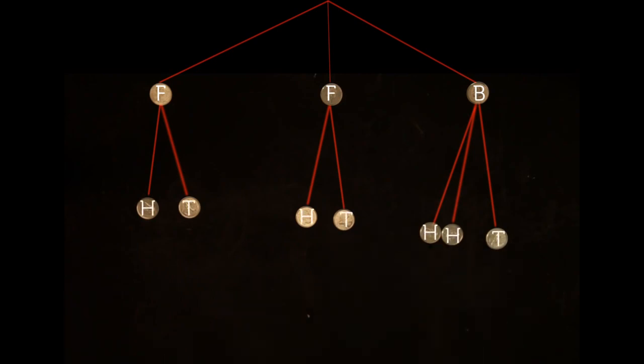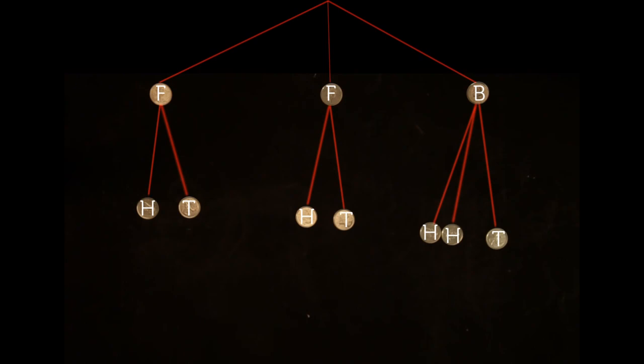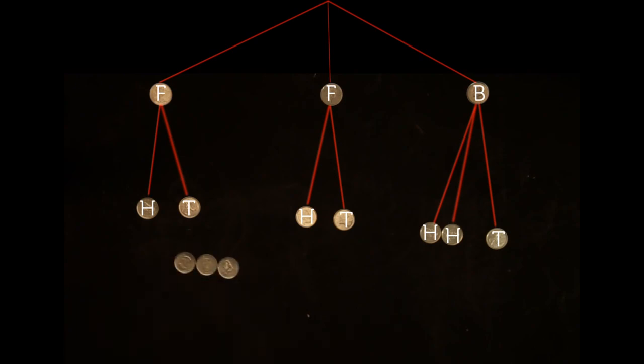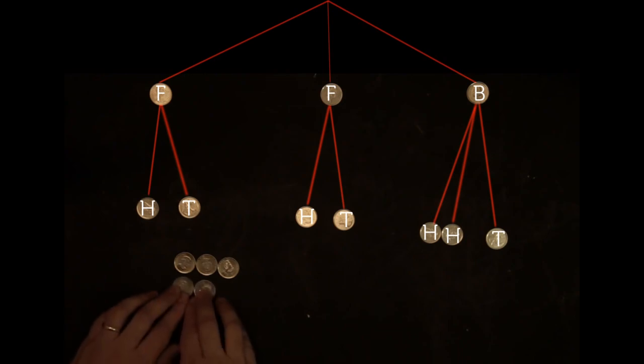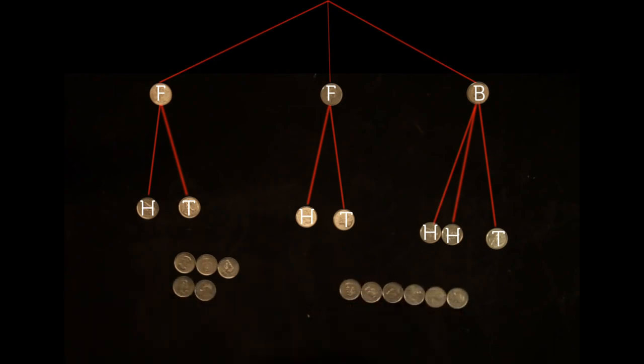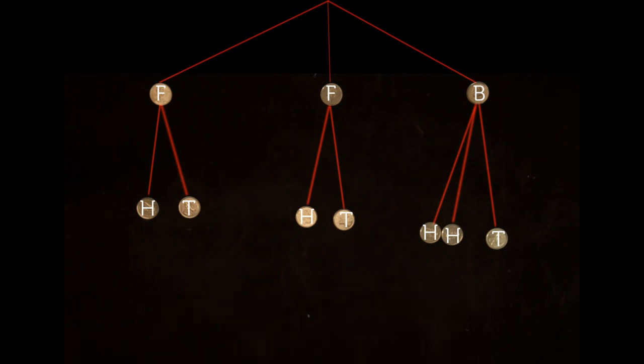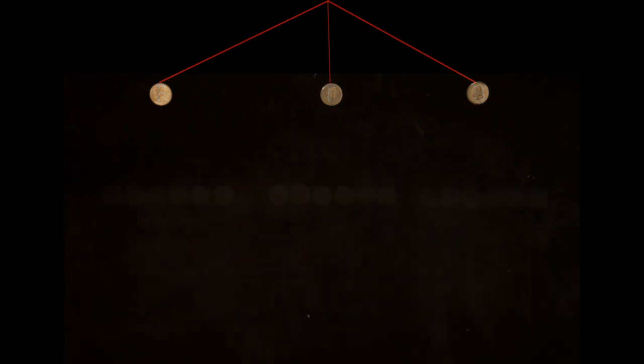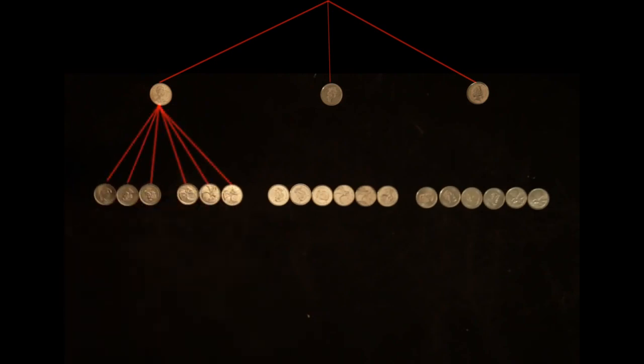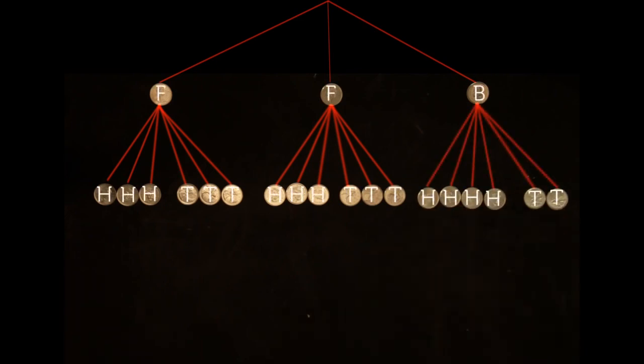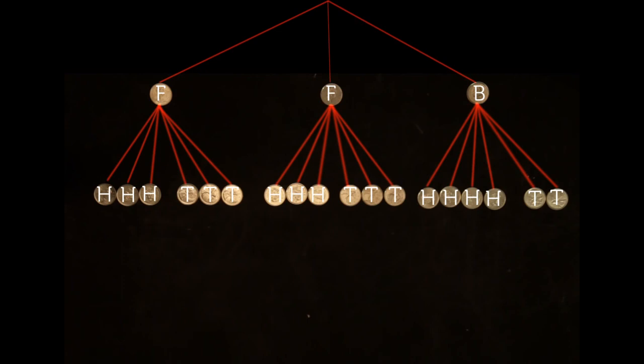Now, the trick is to always make sure our tree is balanced, meaning an equal amount of leaves growing out of each branch. To do this, we simply scale up the number of branches to the least common multiple. For two and three, this is six. And finally, we label our leaves. The fair coin now splits into six equally likely leaves, three heads and three tails. For the biased coin, we now have two tail leaves and four head leaves. And that is it.